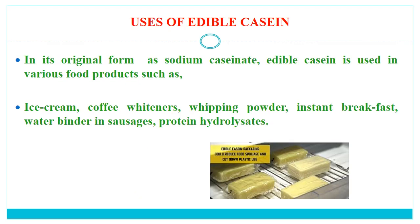The uses of edible casein include, in its original form as sodium caseinate: ice cream, coffee whiteners, whipping powder, instant breakfast, and as a water binder in sausages. It can also be used to prepare protein hydrolysates by enzymatic or acidic hydrolysis, which has many other special uses.